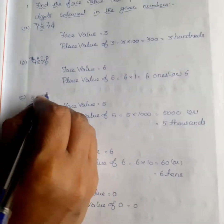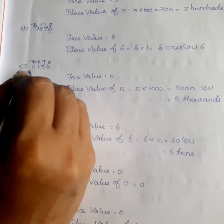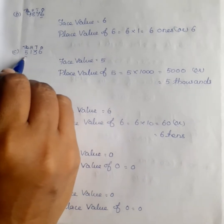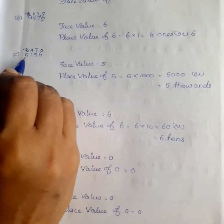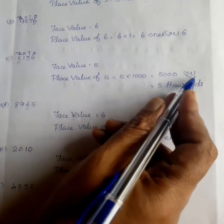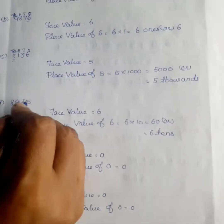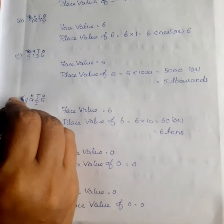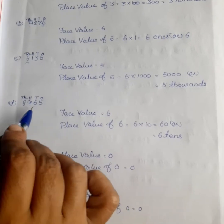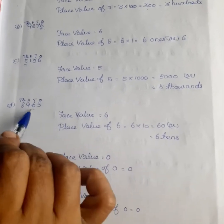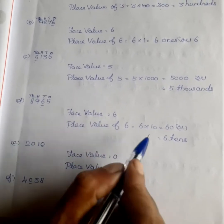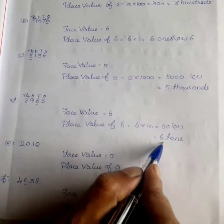Next, considering the number with places 1, 10, 100, 1000 — the face value of 5 is 5 and the place value of 5 is 5 into 1000, which equals 5000. Then the face value of 6 is 6 and the place value of 6 is at the 10's place, so 6 into 10 equals 60.